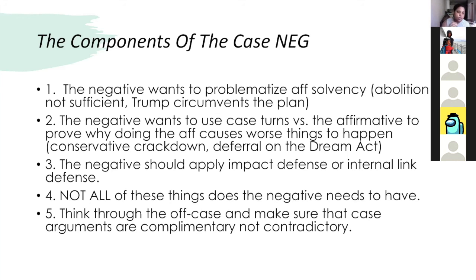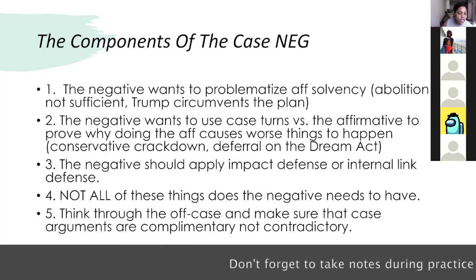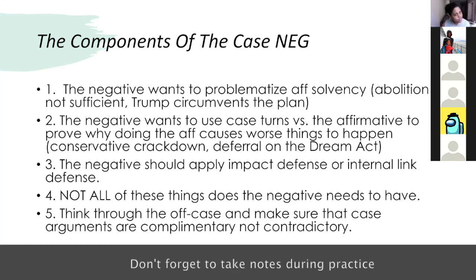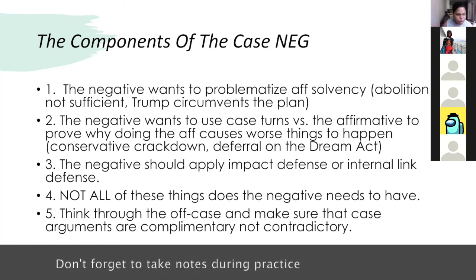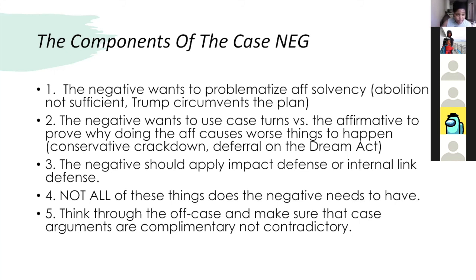An internal link defense would be that abolition doesn't solve for systematic racism, or abolition makes things worse. Fourth, not all of these things does the negative need to have — you're picking a few, testing them, because you're not committed to an advocacy. Fifth, think through the off-case and make sure the case arguments are complementary, not contradictory. For example, don't read impact defense against nuclear war and then have a disad whose impact is nuclear war — the affirmative would simply kick out of that advantage and take out your disad impact.